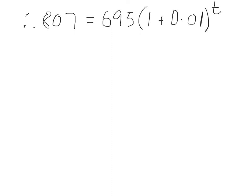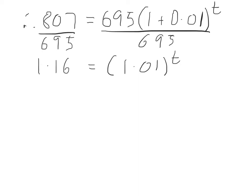So, first thing we can do is basically just getting the problem down to the T being by itself as usual. So, we can, for example, divide both sides by 695. We always do the same thing to both sides, remember, to keep it balanced. So, that gets rid of the 695. And that leaves us with 1.01 to the power of T. And 807 divided by 695 is 1.16. So, 1.16 is equal to 1.01 to the power of T.